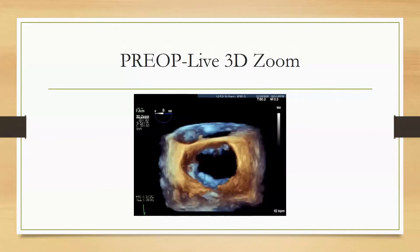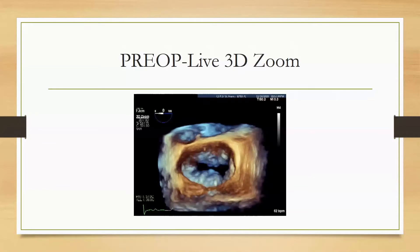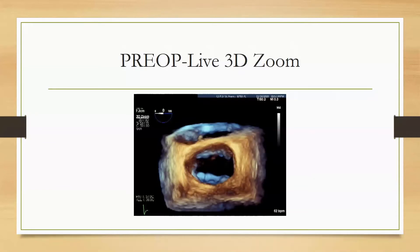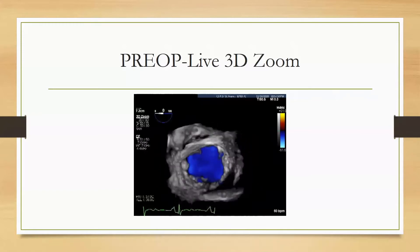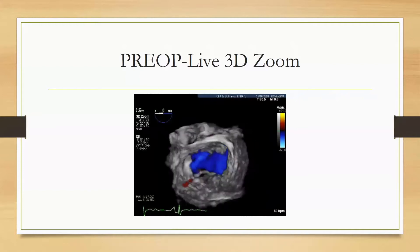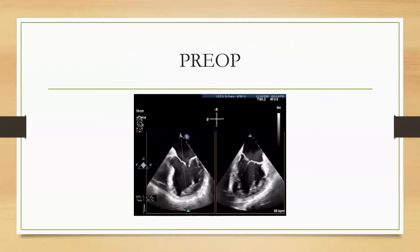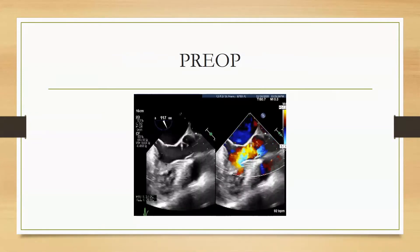In the OR, we have some live 3D views, and we can see this Barlow's-like appearance with bi-leaflet prolapse. On the color Doppler imaging, the coaptation line for mitral vegetation is pretty significant. We can also note that cortal SAM is evident, and despite the cortal SAM, there is no LVOT obstruction.